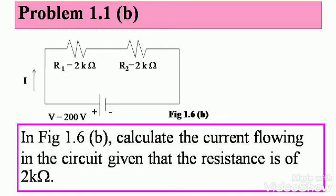In figure 1.6b, calculate the current flowing in the circuit given that the resistance is of 2 kilo ohm. You may notice that there are two resistances here. Each of them have a value of 2 kilo ohm. The voltage drop is 200 volt. Note down this circuit as well. Let's solve the problem.